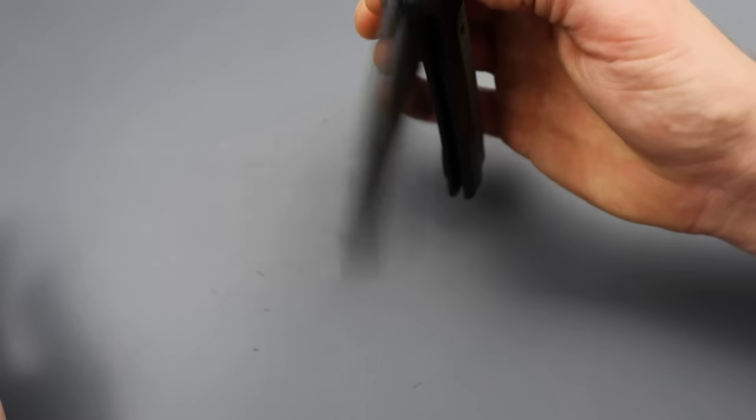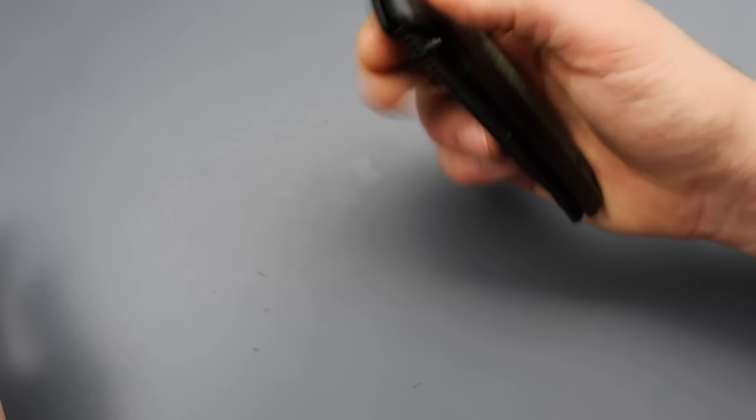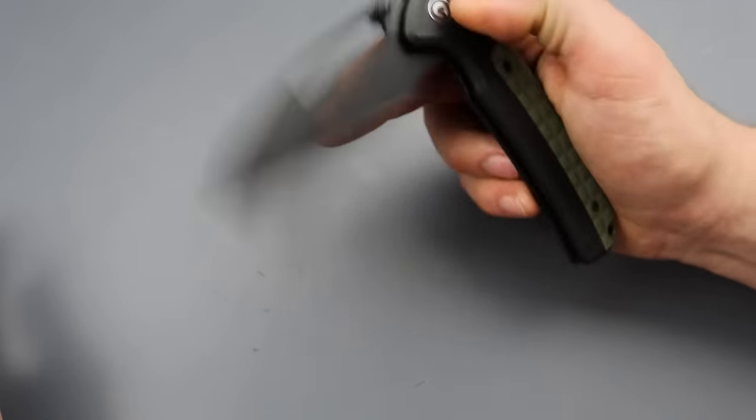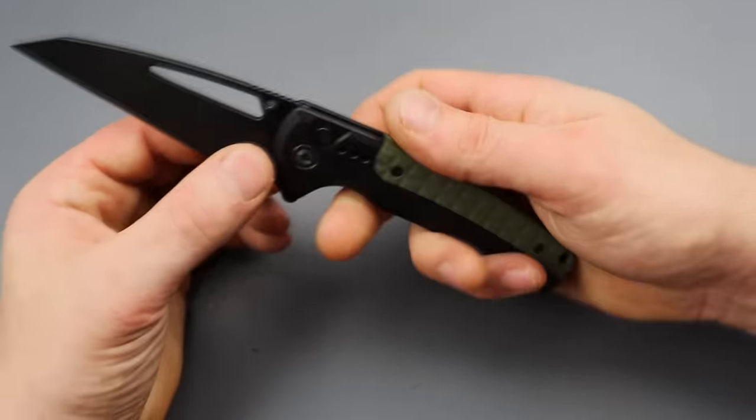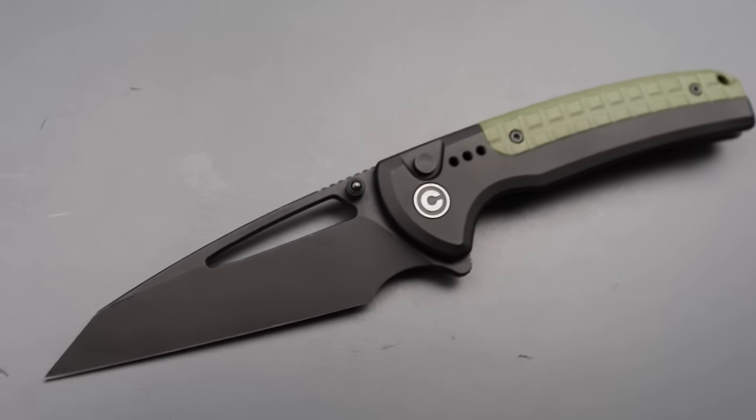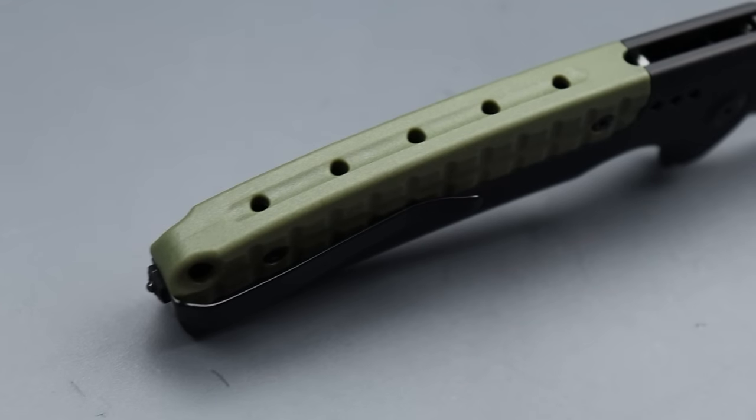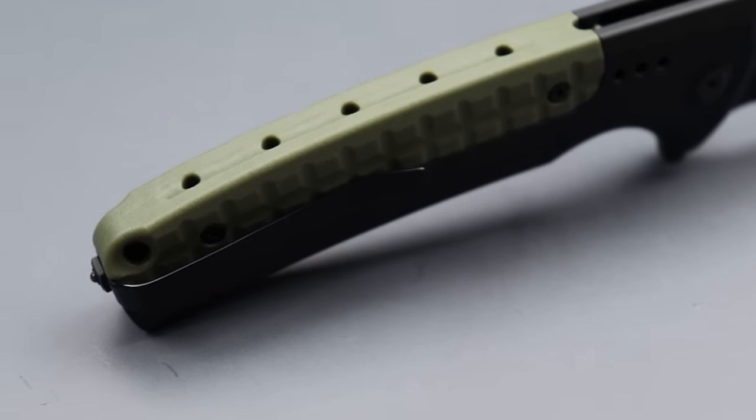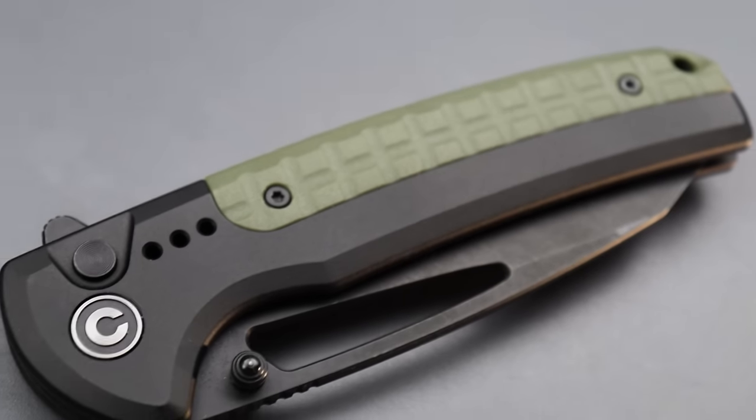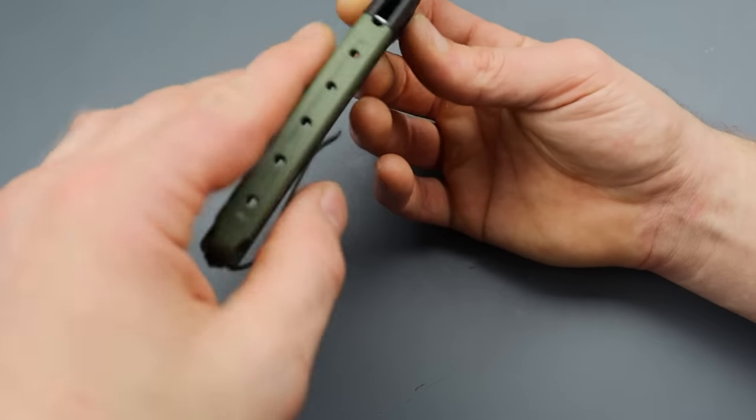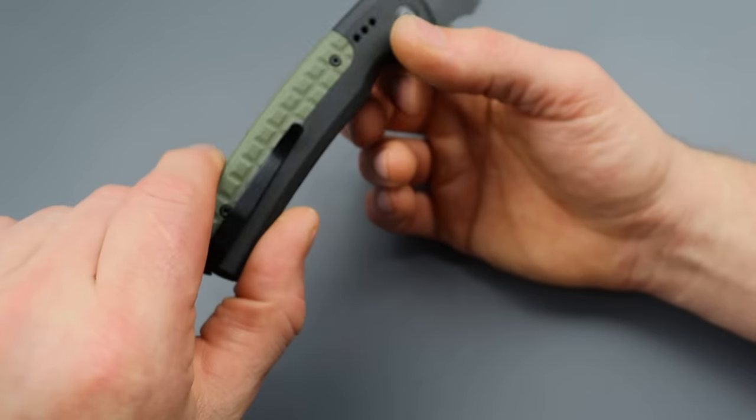They do such a damn good job. You got the thumb studs if you don't like to use the hole deployment. Or, you know, maybe you like to use them all like me. The handle is an aluminum handle with this FRN backspacer that basically is like an integral backspacer. I know it's not an integral, but it's an integral backspacer. Meaning, one solid piece that wraps from one side to the other.